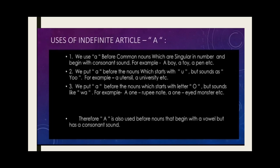We also put 'a' before nouns which start with 'u' but sound like 'you' — for example, a utensil, a university. Even though 'u' is a vowel, since it is pronounced as 'you' and not as 'uh' like in 'umbrella,' we put 'a' before it. Similarly, we put 'a' before nouns starting with 'o' which sounds like 'w' — for example, a one-rupee note, a one-eyed monster. So 'a' is also used before nouns that begin with a vowel but have a consonant sound.